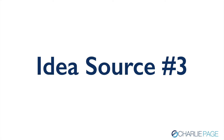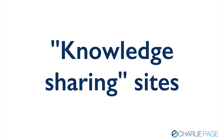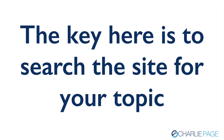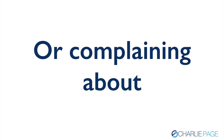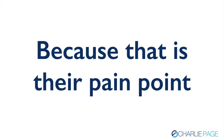Here's idea source number three — very easy to use: knowledge sharing sites. These are super popular. I'm not really talking about Wikipedia, although that could be considered a knowledge sharing site. I'm talking about sites with a lot more interactivity. The best known is Quora. The key is to search the site itself for the topic you're interested in. So if it's knitting, that's what you'd search for inside Quora. Then listen in to what people are asking. If you want to participate in the conversation, great. But if you just want to lurk and listen, that's great too. Especially look for what they're complaining about — if you find multiple people complaining about the same thing, you've found a pain point. And if you can solve that pain point with a free lead magnet, you're going to build a mailing list and help people.